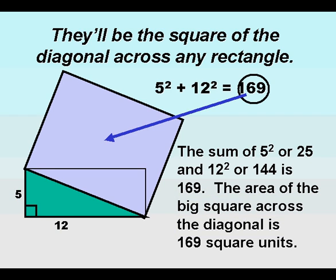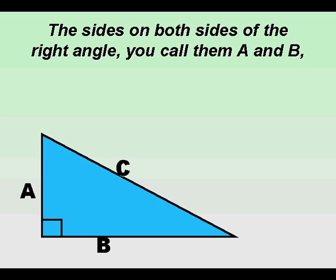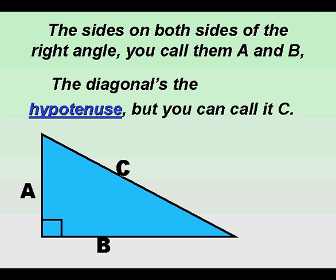They'll be the square of the diagonal across any rectangle. The sides on both sides of the right angle, you call them A and B. The diagonal's the hypotenuse, but you can call it C.